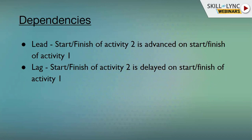There are two types of dependencies — lead and lag. Lead means the start or finish of activity two is advanced relative to the start or finish of activity one. These dependencies are used in combination with relationships to formulate a complex schedule. Lag means the start or finish of activity two is delayed relative to the start or finish of activity one.